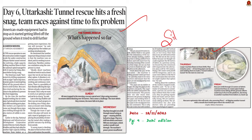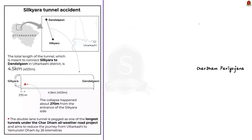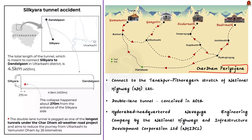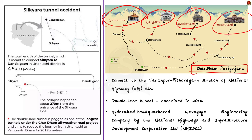The Silkiyara-Barkot tunnel is part of the ambitious Char Dham All Weather Road Project of the central government. The Char Dham is a group of four Hindu pilgrimage sites — Badrinath, Kedarnath, Gangotri, and Yamunotri — and the project aims to make the journey to these centers safe, faster, and more convenient. The route also connects to the Tanakpur-Pithoragarh stretch of National Highway 125, part of the Kailash Mansarovar Yatra route. The tunnel is 4.5 kilometers long, connecting Silkiyara to Dandalgaon in Uttarkashi district, and is a double-lane tunnel — one of the largest under the project.